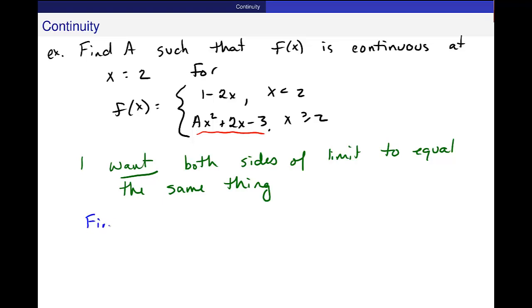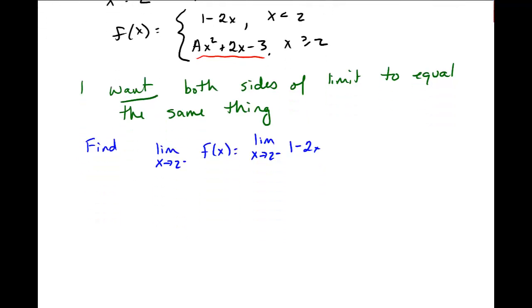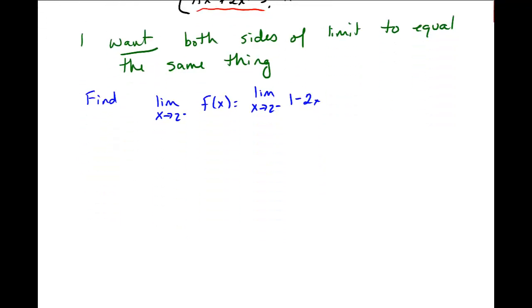So let me go ahead and find, so find, I want to find the limit from the left as x approaches 2 from the left of this function f(x), which is the same thing as finding the limit on the left side, this is 1 minus 2x. That's what I have. So let me make sure, let me go and draw maybe a graph and we'll find the limit.